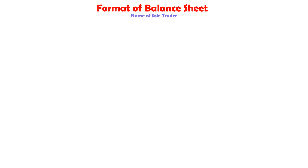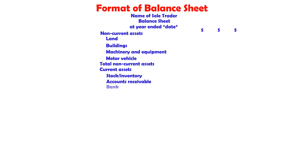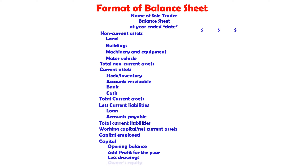Format of the balance sheet: name of sole trader, balance sheet at year ended, date, dollar signs. Non-current assets: land, buildings, machinery and equipment, motor vehicle, total non-current assets. Current assets: stock/inventory, accounts receivable, bank, cash, total current assets. Less current liabilities: loan, accounts payable, total current liabilities. Working capital equals net current assets. Capital employed: capital opening balance, add profit for the year, less drawings, equals owner's equity.